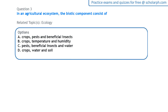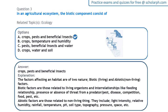Next, on ecology: in an agricultural ecosystem, the biotic component consists of living organisms. There are two components in an ecosystem — the biotic component and the abiotic component. The biotic component is the living part, while the abiotic component is the non-living part. The biotic components here would consist of the crops (plants), pests (animals), and beneficial insects. Temperature, water, and soil are examples of abiotic factors.